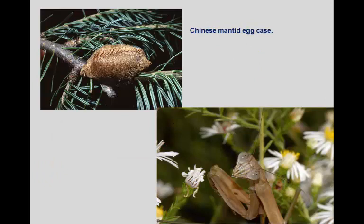Praying mantids also lay eggs in an ootheca — we talked about that term with cockroaches. The praying mantid egg case looks sort of like styrofoam: an artificial bubbly material they extrude out that hardens. Why would they lay eggs in something styrofoam-like? They have to overwinter. It's insulation to keep the eggs from freezing. They also have some glycol and glycogen in the eggs themselves as antifreeze, but having a little insulation is pretty good.